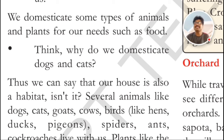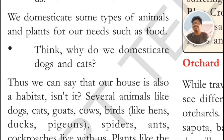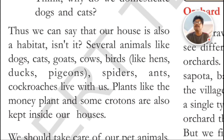Why do we domesticate dogs and cats? Because the dog is a faithful animal. And cats are close to human beings — cats also catch rats in our houses. To catch rats, we keep cats. That's the reason why we domesticate dogs and cats in our houses.